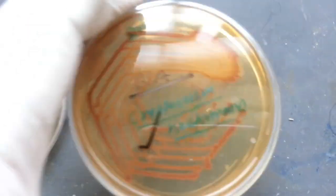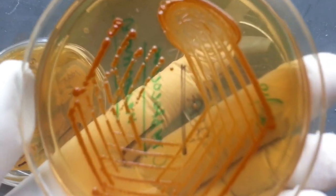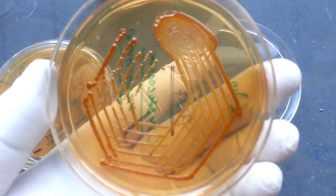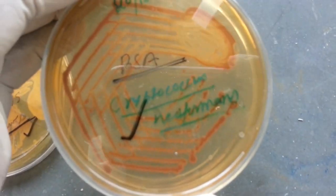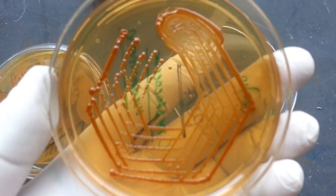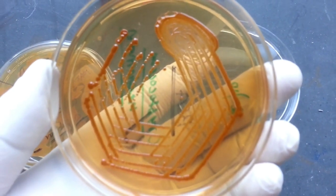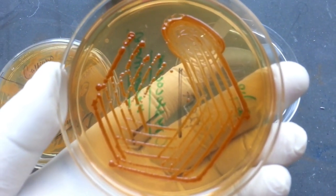Within one week, when incubated at 30 degrees Celsius, Cryptococcus neoformans produces phenol oxidase, which oxidizes the caffeic acid in the niger seed into melanin. In this way, brown colonies are formed.